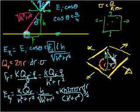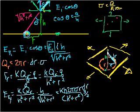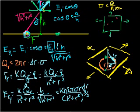Where we left off, we had this infinite plate — just an infinite plane — with a charge density sigma. We're taking a point h units above the surface of the charge plate, and we wanted to figure out the electric field at that point generated by a ring of radius r, essentially centered at the base of where that point is above. We want to figure out what the electric field is generated by this ring at that point.